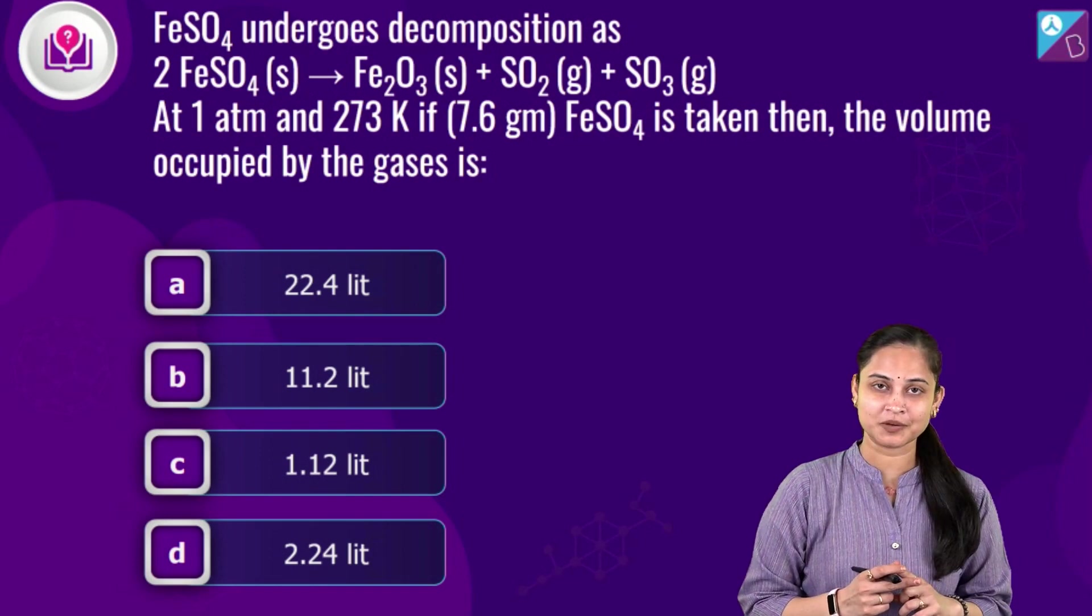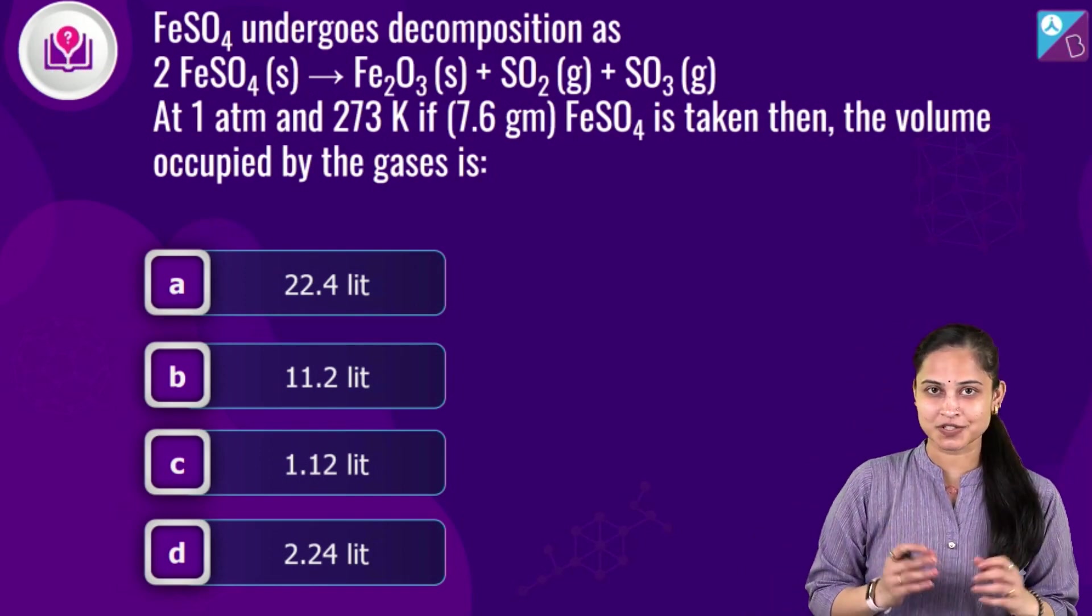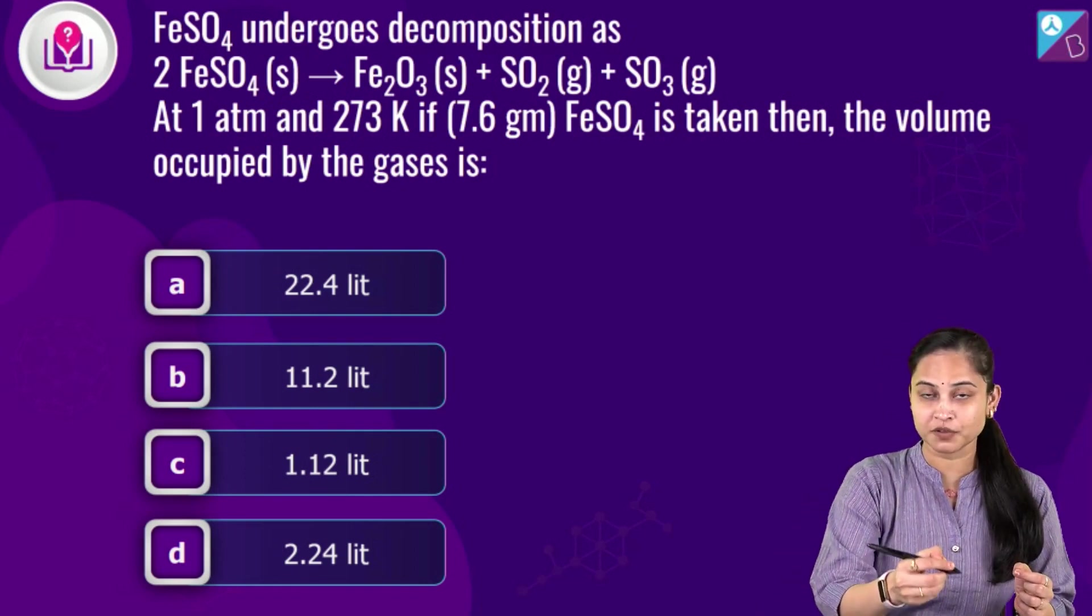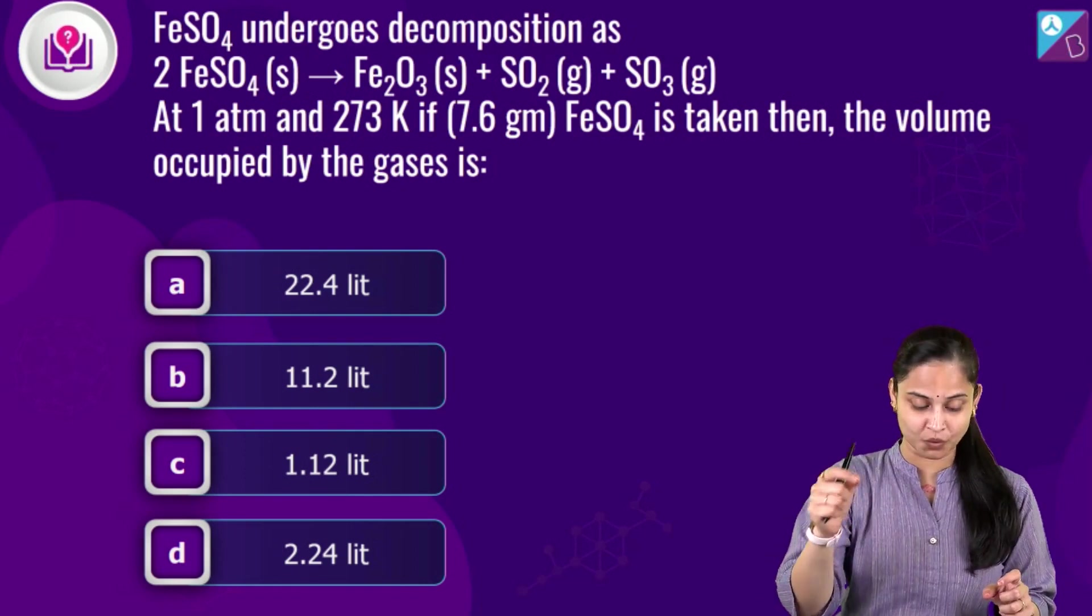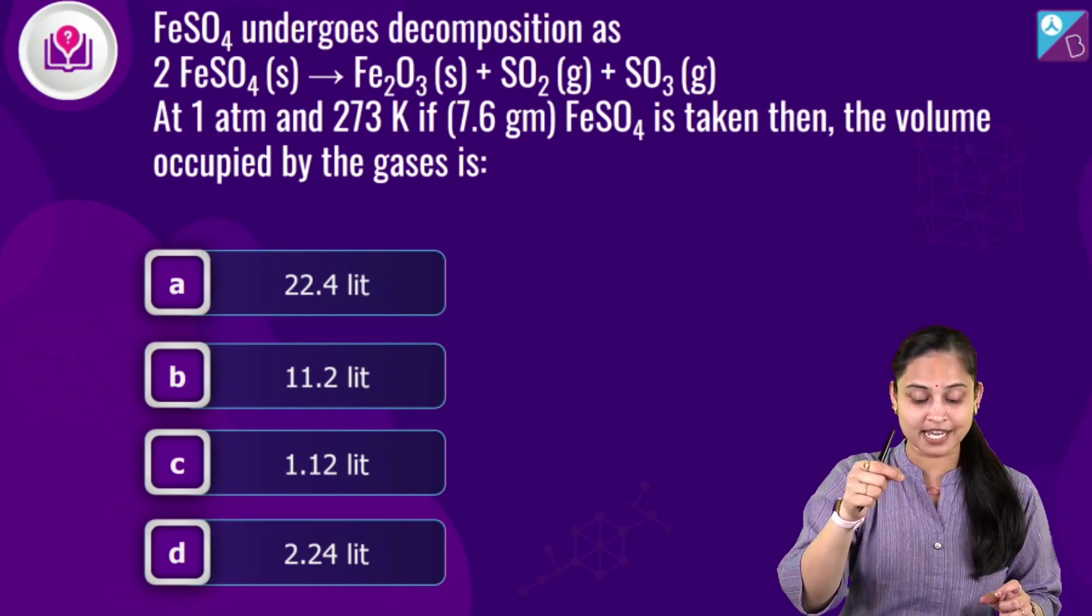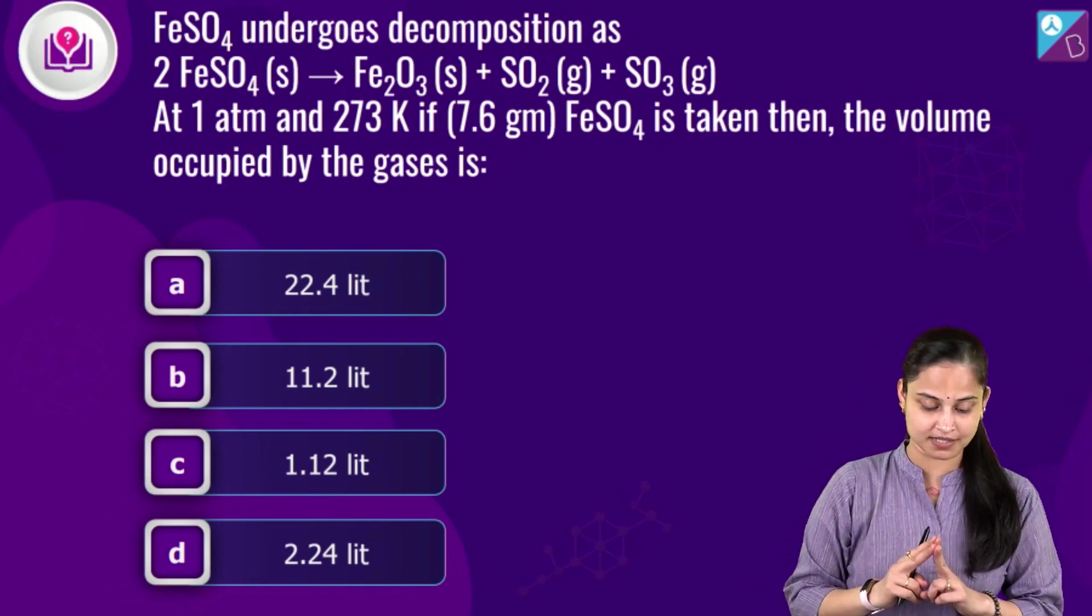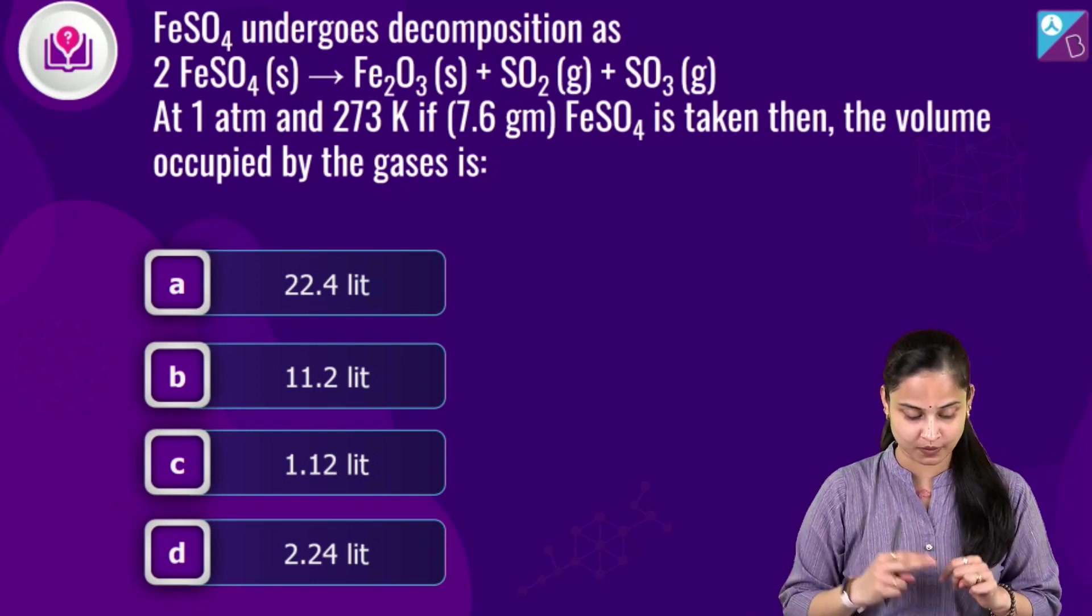So let's actually talk about the question statement. The question says FeSO₄ undergoes decomposition as 2 FeSO₄ solid giving us Fe₂O₃ plus SO₂ plus SO₃. So we are actually getting two gases in the product side, sulphur dioxide and sulphur trioxide gases.